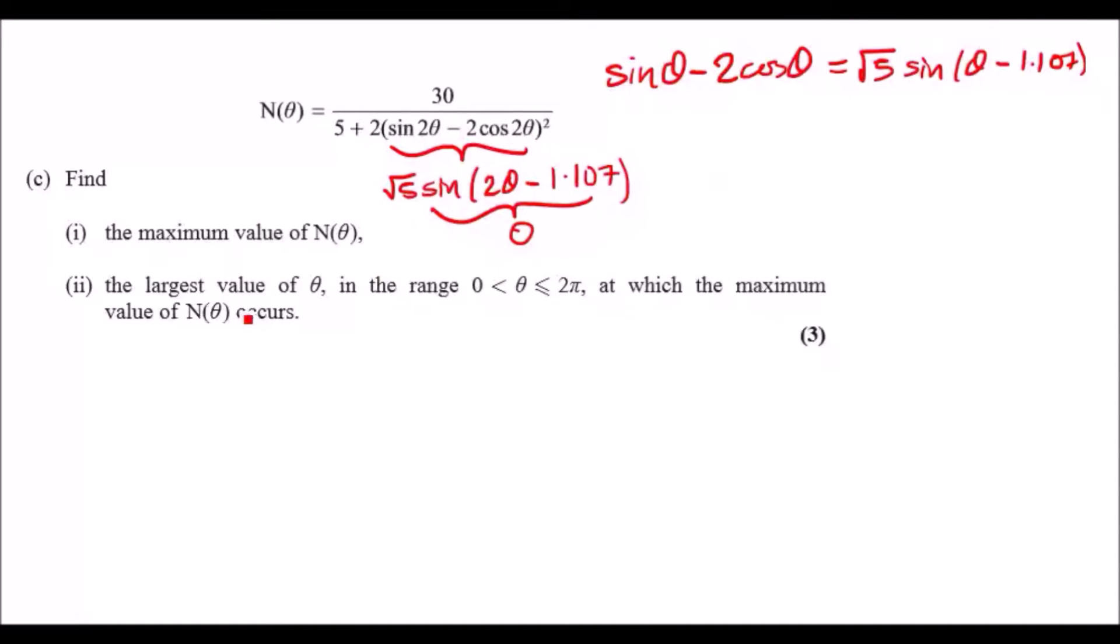And doing that, you're gonna get N, the maximum value of N is gonna be 30 over 5 plus 2 root 5 times 0 squared, and this is gonna give us 6. So I couldn't think of a bigger solution.